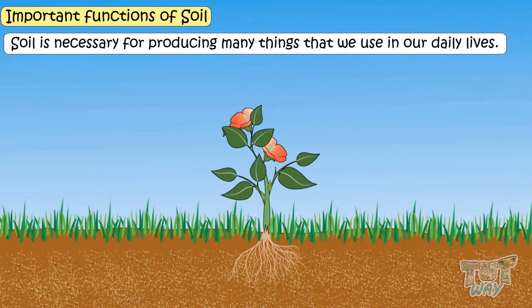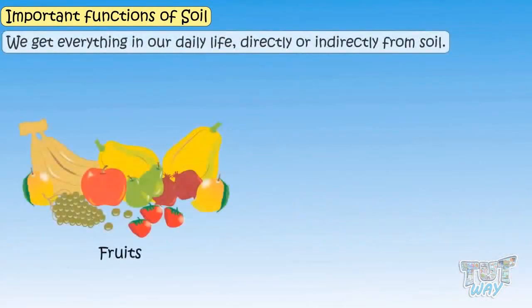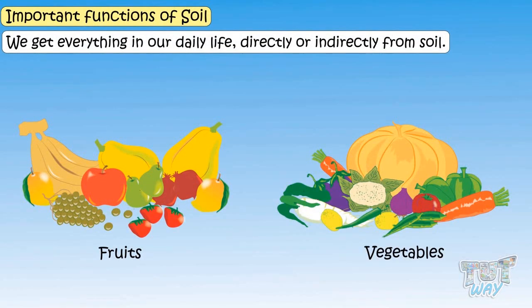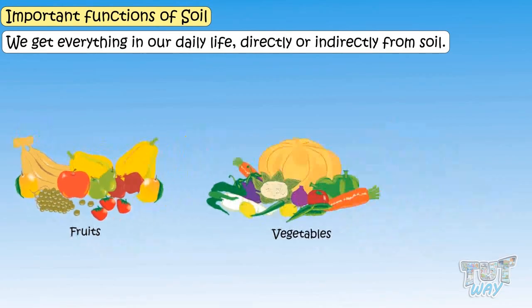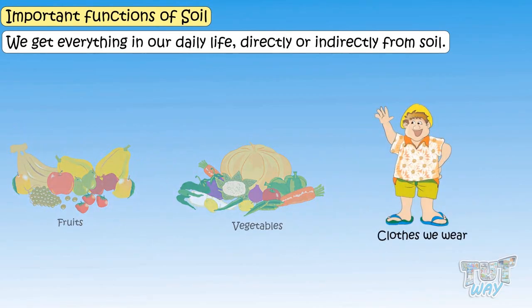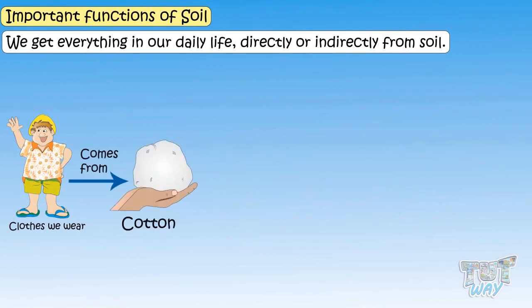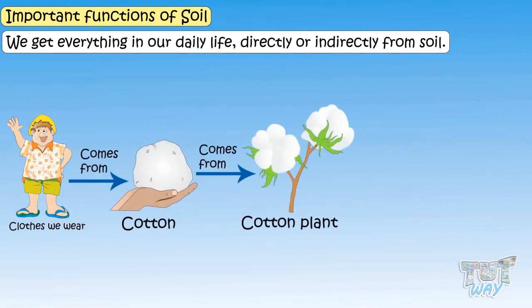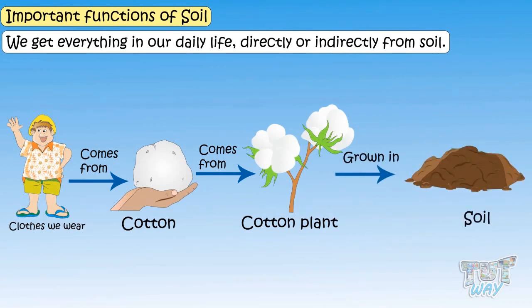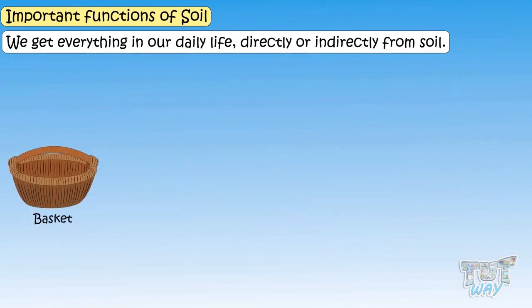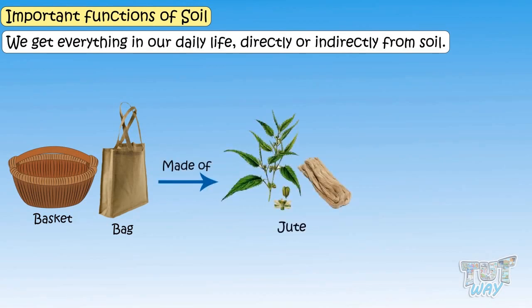Soil is necessary for producing many things — almost everything that we use in our daily lives. All the fruits and vegetables that we eat are supported by soil. Even the clothes we wear: most clothes come from cotton, which comes from cotton plants grown in soil. Baskets and carry bags are made from jute, and jute too grows in soil.